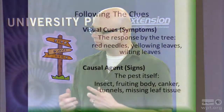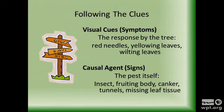Here's how we define signs and symptoms. A symptom is the response of the tree to something that's attacking it — it might be needles or leaves turning a different color, or wilting. The sign is actually the pest itself. It might be a mushroom, it might be the insect, or it might be the damage done by the insect, like the galleries underneath the bark.